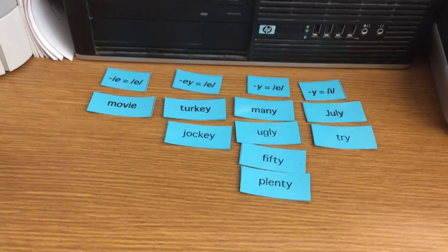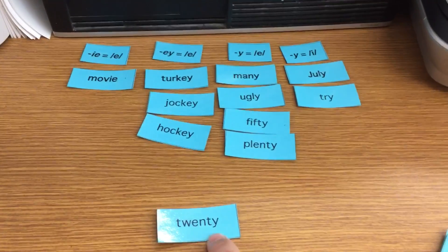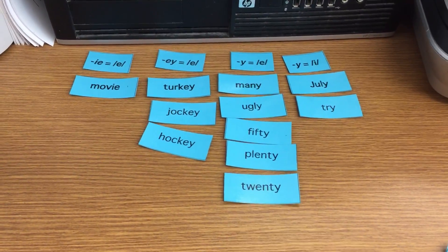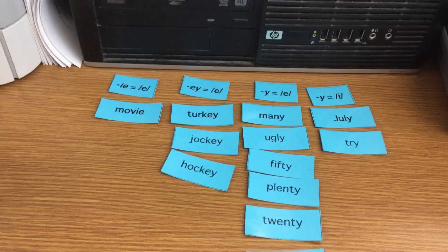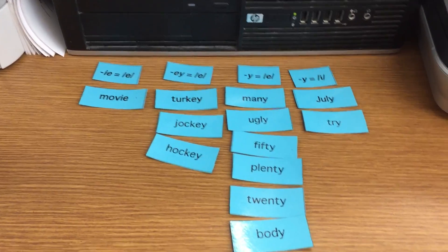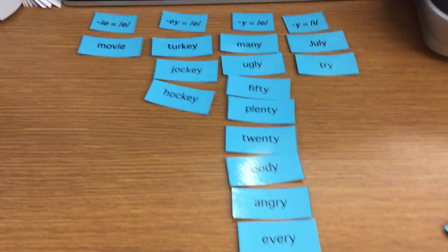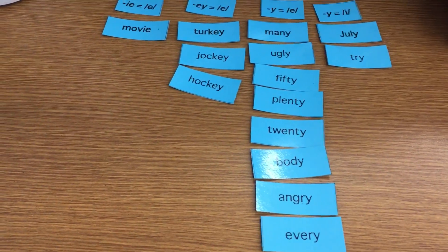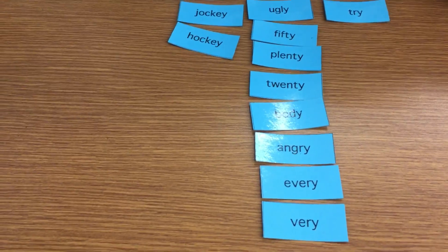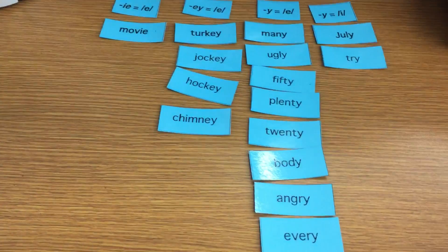Jockey has an EY for under turkey. Hockey has an EY for under turkey. Twenty has just a Y with the E sound. Body has just a Y with the E sound. Angry has just a Y with the E sound. Every has just a Y with the E sound.